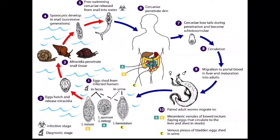The schistosomulae move to the lungs via venous circulation, then to the heart, and finally to the liver, where they mature and migrate via the portal vein system.